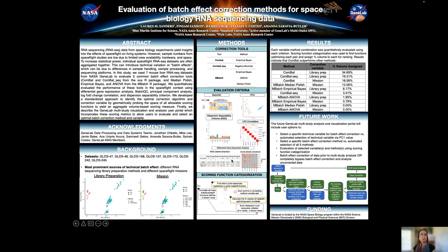Imagine each of these two dimensions represents a specific evaluation criterion. In reality, we have six, but only two are shown. Suppose each point on this plot represents a competing method-variable pair. As you can see, each pair's performance changes somewhat depending on the criteria you use.